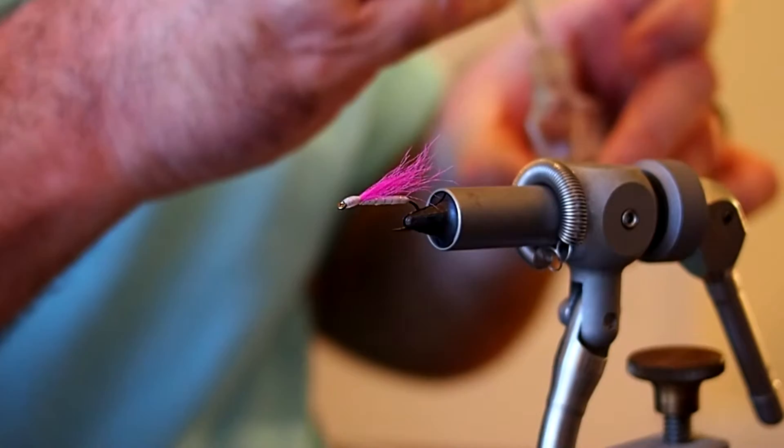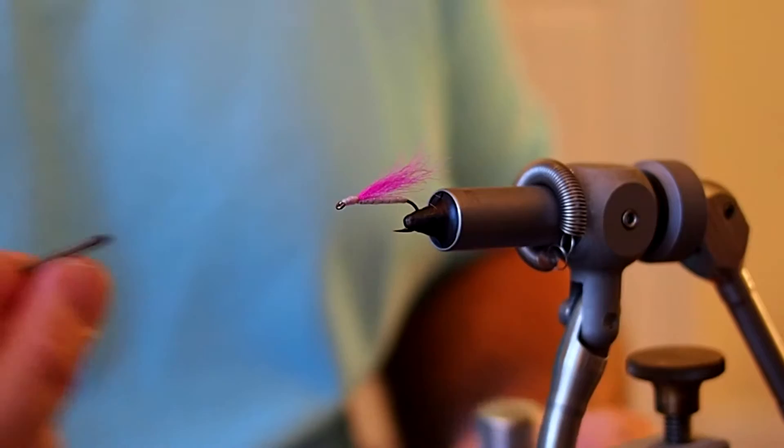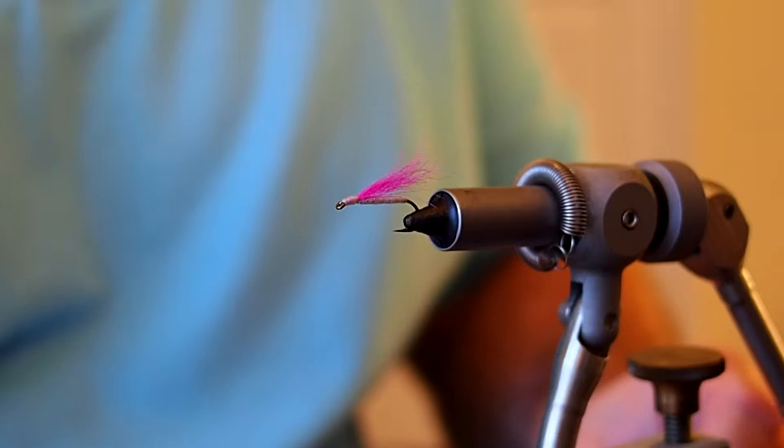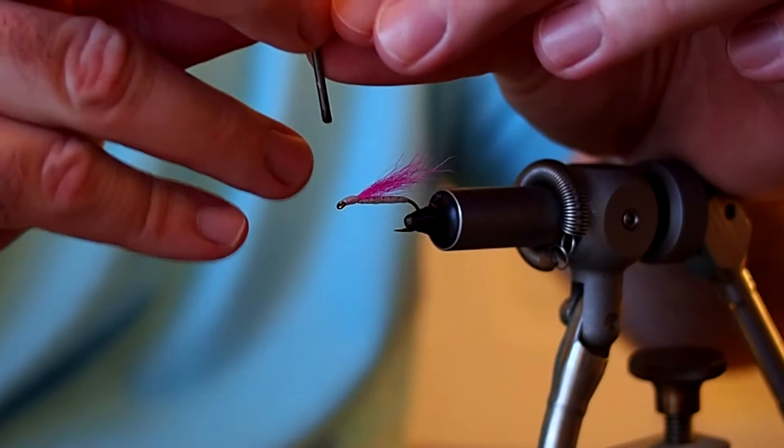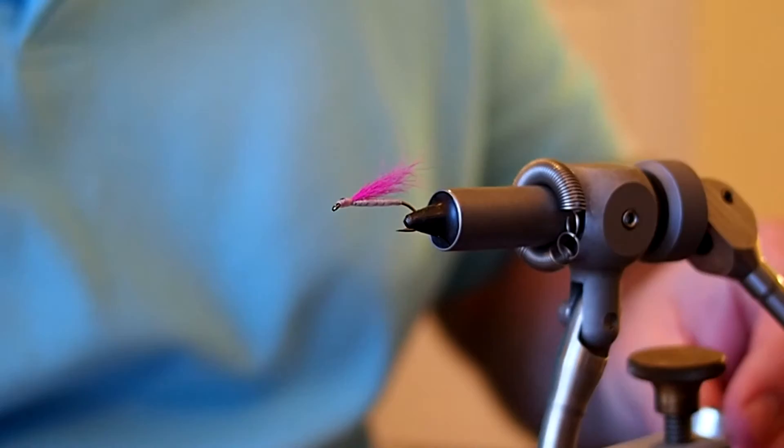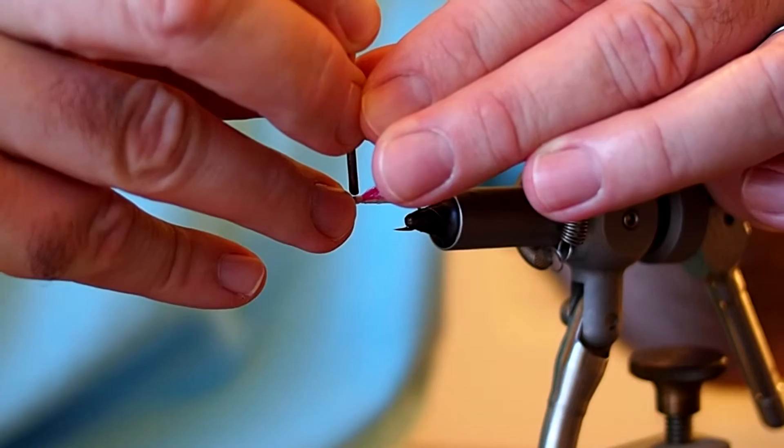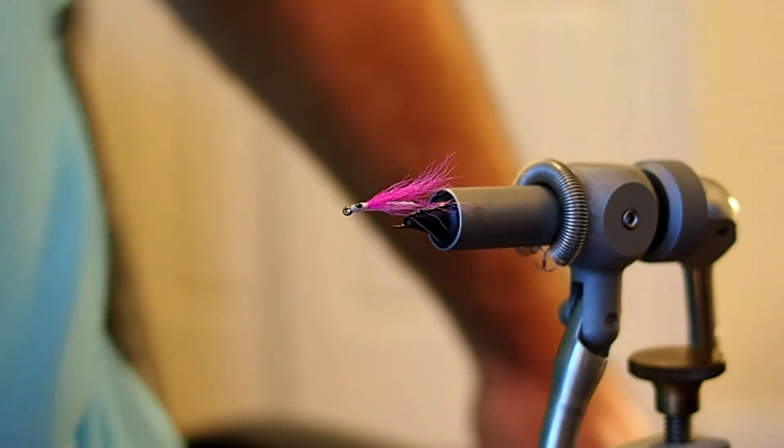Alright, our Sally Hansen's is dried. I'm going to go ahead and paint on a black eye. I've just got some black nail polish here and a small nail that I filed off the head. I'm just going to dip that nail in the paint and then just touch the paint to the top of the head. Something about like that. I'll let that dry and then just finish the fly with an extra coat of Sally Hansen's to protect the eye. But I'll spare you that.